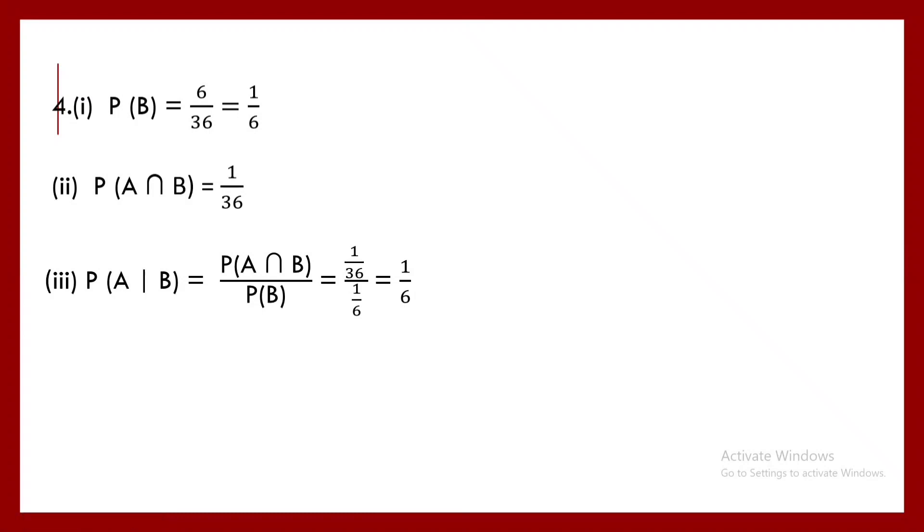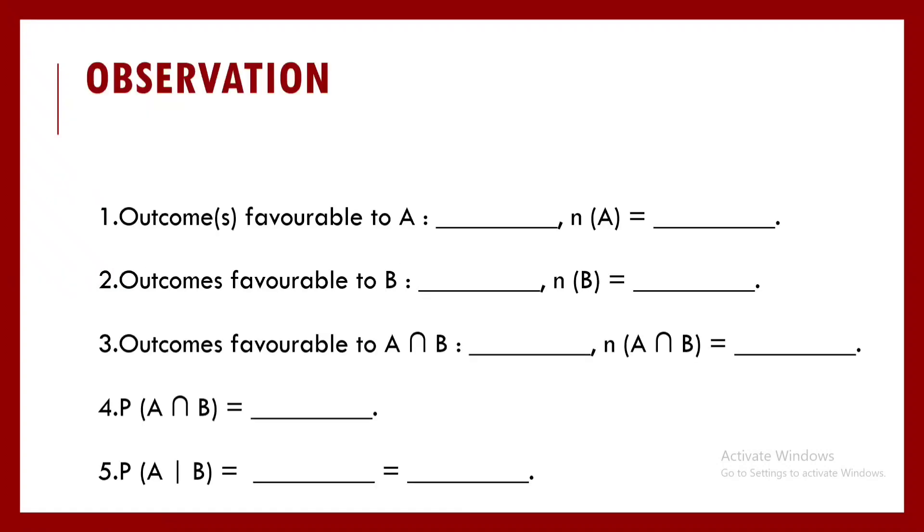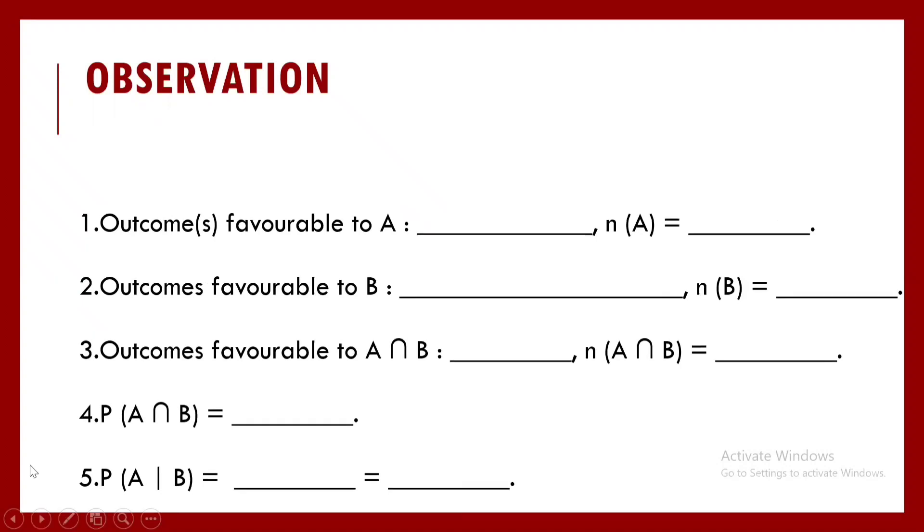I will now come to the observation. The set of blanks are there and I will have you to fill them up using this, whatever we have discussed. The outcomes favorable to A are what? If you remember, what was A? A was when the sum of the numbers in both dice is coming out to be 10. So I told you that the outcomes are 4,6, 5,5, and 6,4. So N of A can be written as 3.